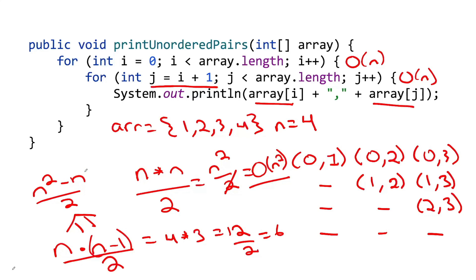n times n minus 1 is just n squared minus n over 2. Again, the exponent always takes precedence. So you get rid of the minus n, get rid of the 2, and you're again just left with n squared.